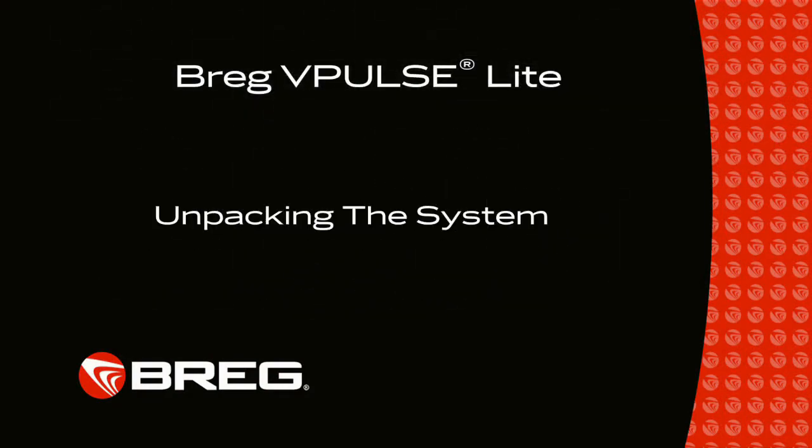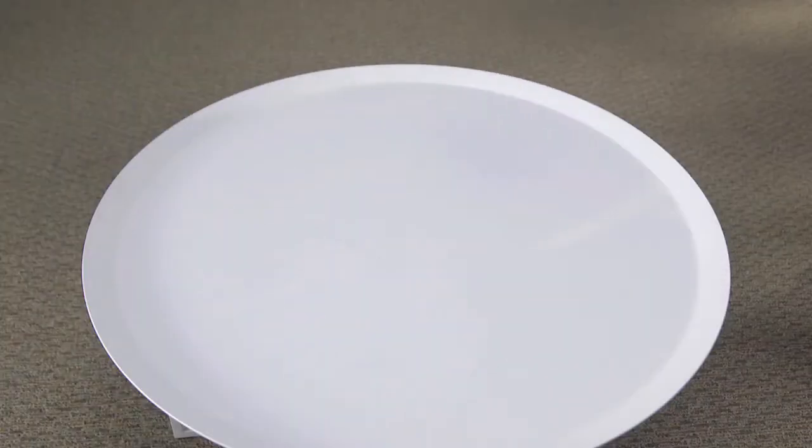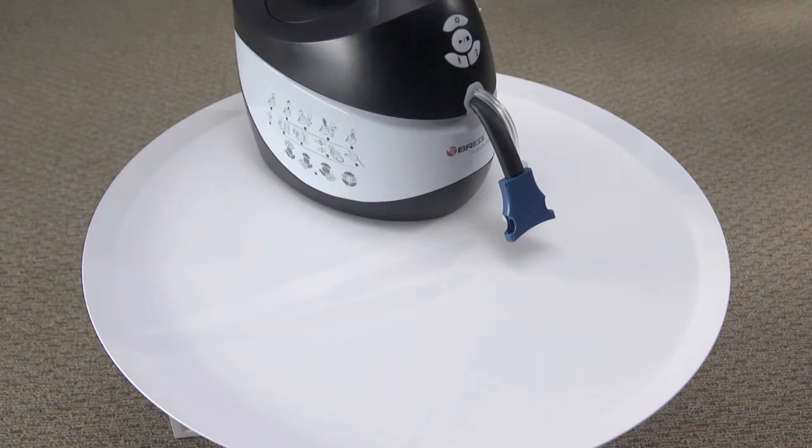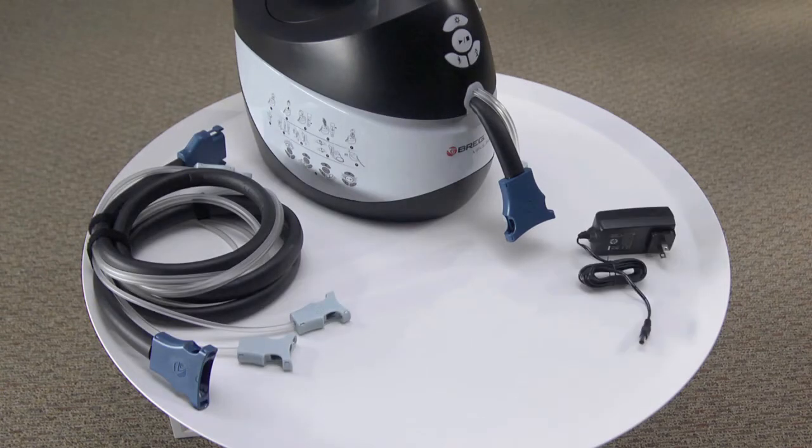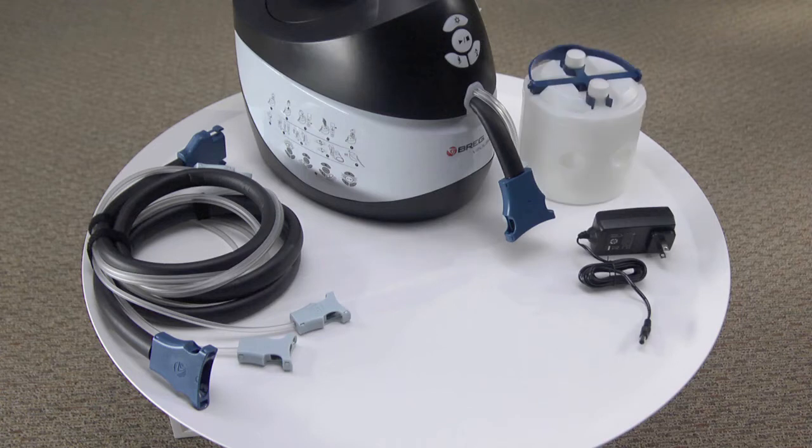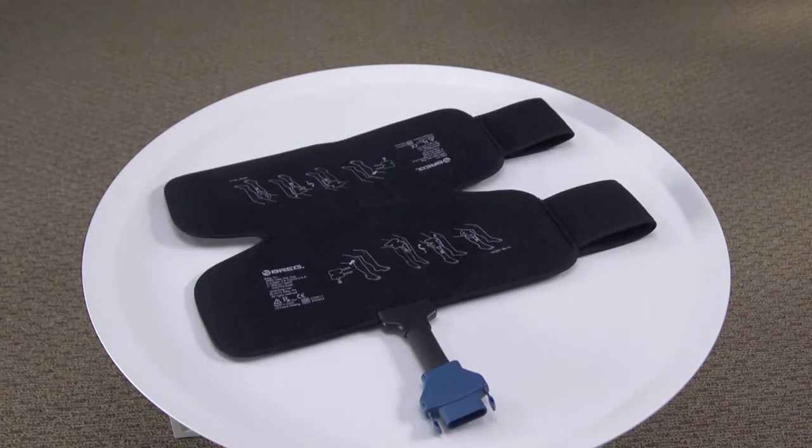This video will explain how to operate your Bregg V-Pulse cold therapy and wound compression. Your V-Pulse system comes with a container, a tubing set, a power wall adapter, ice bottles, and a user's manual. You will also receive one thermal compression pad specific to your needs.